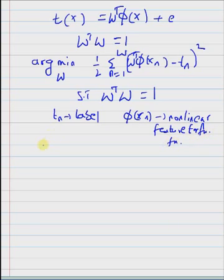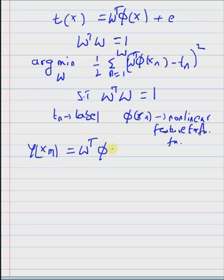Our goal is to determine the prediction function y(x), and y(xm) which is in the form w transpose phi of xm. So first we have to find the weight vector w, which can be determined by minimizing this cost function.